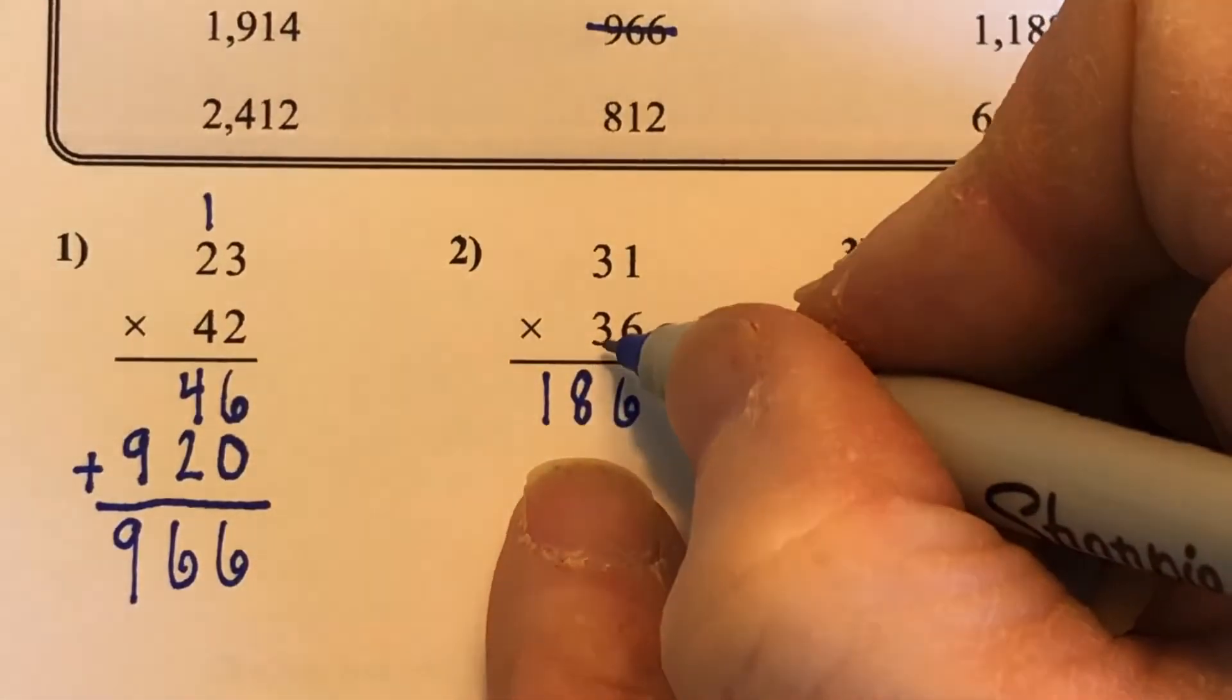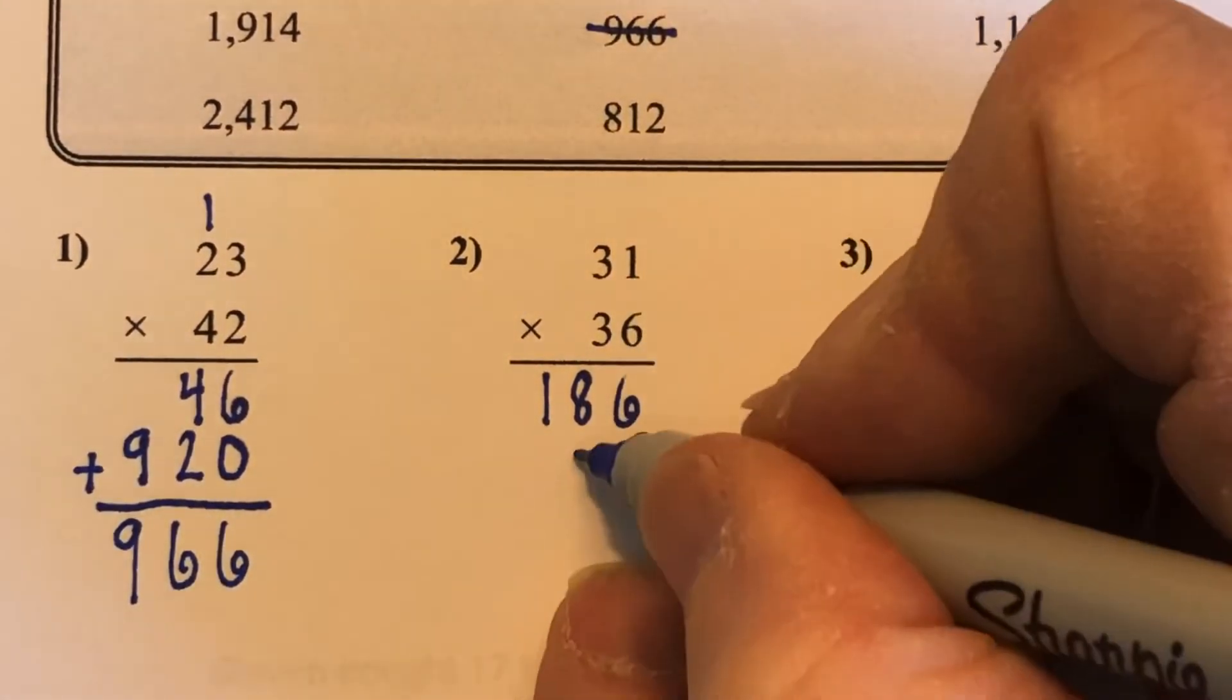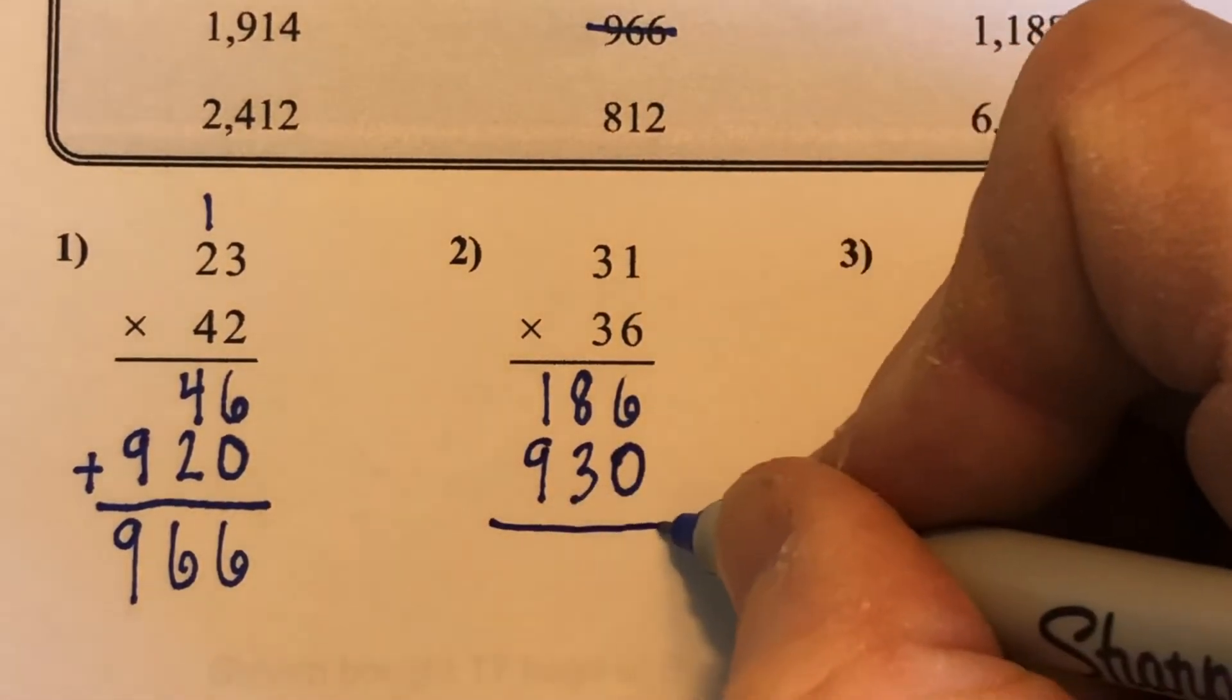Then I move over to my tens place. So I need to put down my 0 here to hold the place. Then I have 3 times 1 is 3. 3 times 3 is 9. Great. Didn't have to carry it all there.